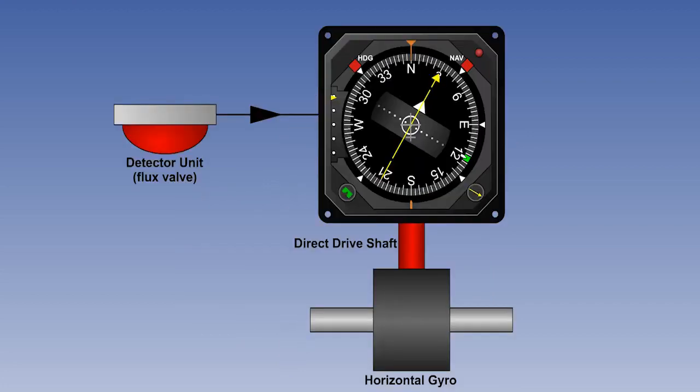The purpose of the detector unit, or flux valve, is to sense the Earth's magnetic field and reproduce it within the compass indicator. We will explain how this is done later. At this stage, we'll just say that magnetic heading has been detected electronically and passed to the indicator in the form of alternating current, or AC. We'll also assume that the compass has already been initially synchronised, in order to make the gyro drive shaft output the same as the flux valve. Again, we'll cover how this is done later.